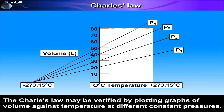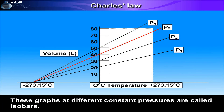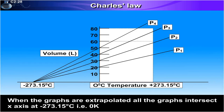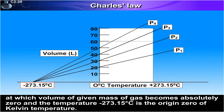Charles Law may be verified by plotting graphs of volume against temperature at different constant pressures. These graphs at different constant pressures are called isobars. When the graphs are extrapolated, all the graphs intersect the x-axis at minus 273.15 degrees Celsius, that is, zero K, at which the volume of a given mass of gas becomes absolutely zero. This temperature, minus 273.15 degrees Celsius, is the origin — zero — of the Kelvin temperature scale.